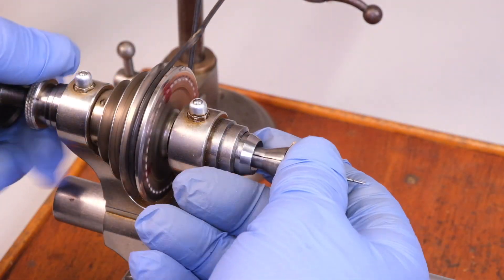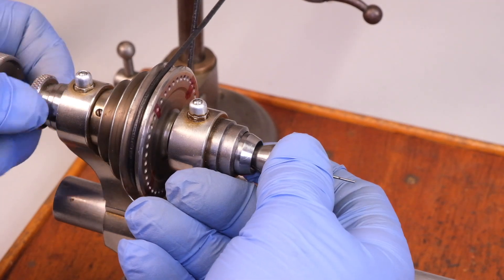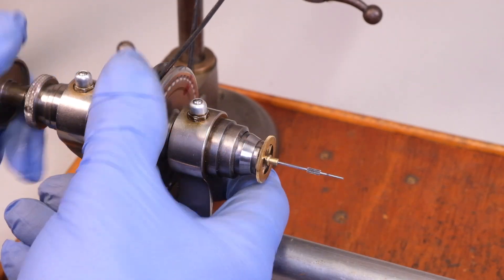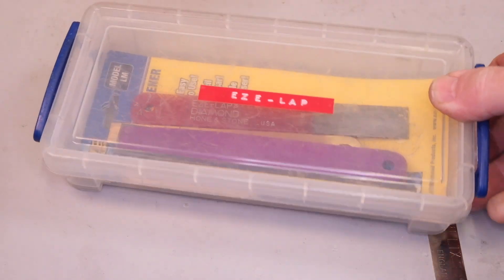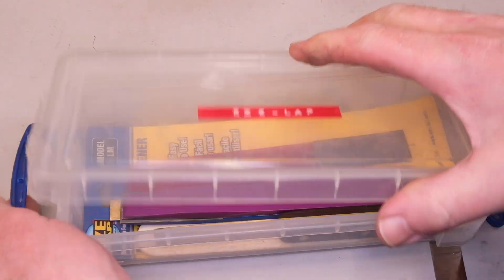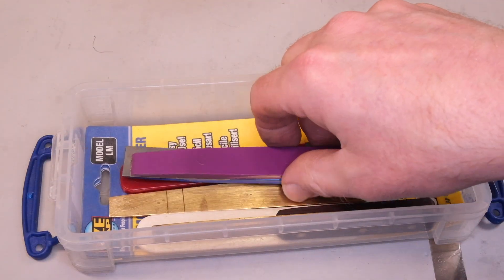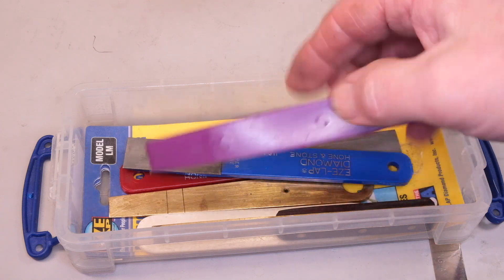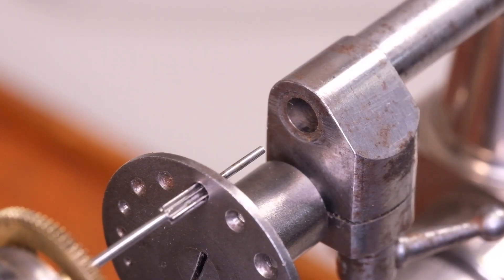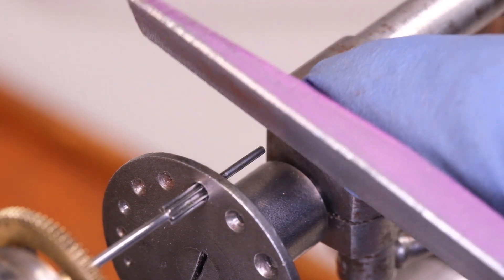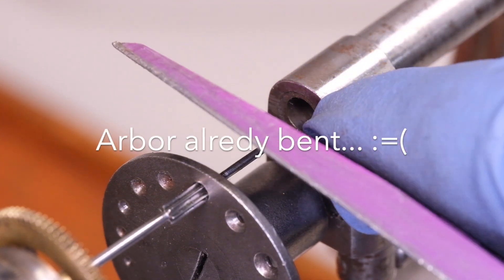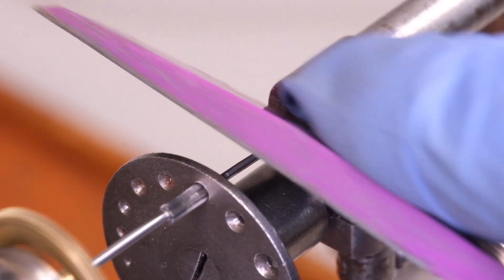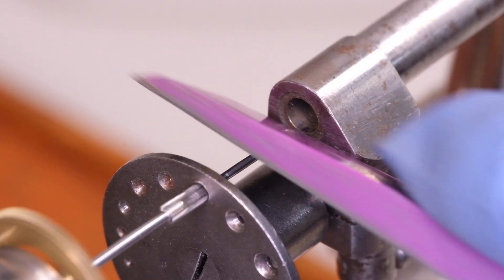It would be possible holding it in a slightly different way, but what I decided to do is to use these easy lap diamond files to file that cone on the end. Now this isn't super precise, it's concentric enough, but remember what we're doing here is we're just making sure that the two ends fit together neatly when we solder them.